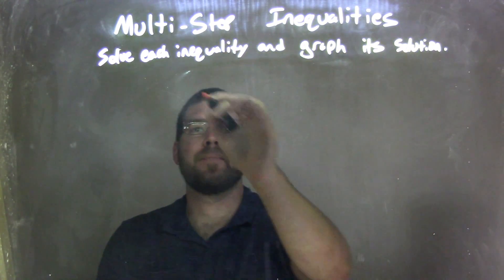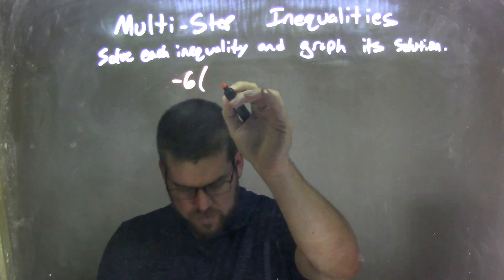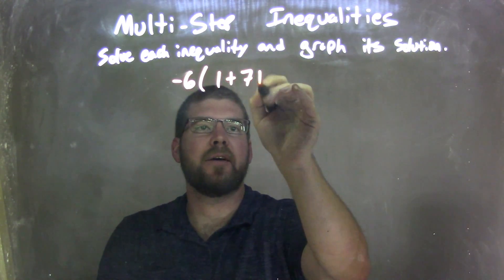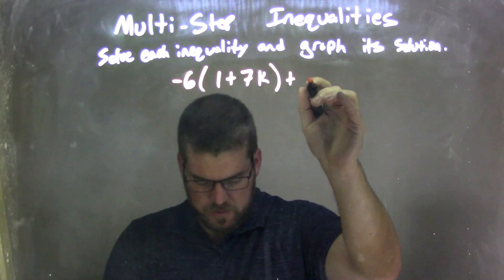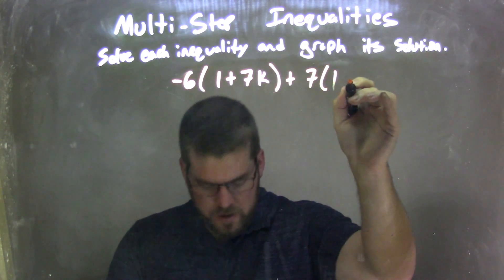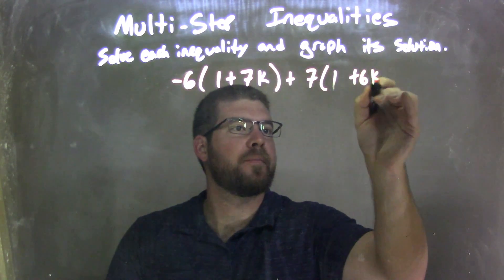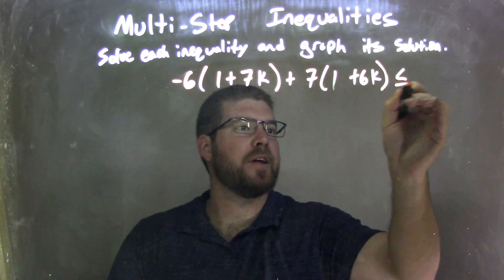So if I was given this inequality: negative 6 times 1 plus 7k, plus 7 times 1 plus 6k, is less than or equal to negative 2.